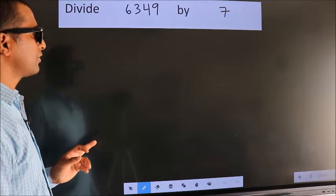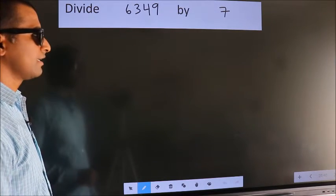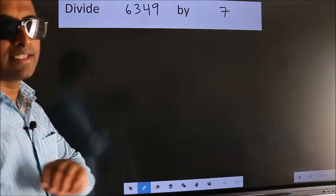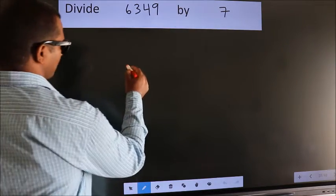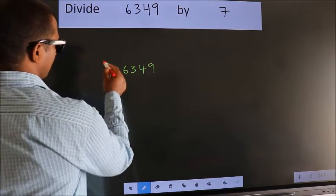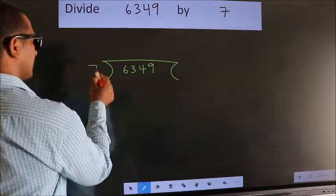Divide 6349 by 7. To do this division, we should frame it in this way. 6349 here, 7 here.